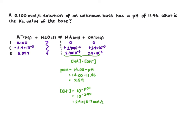Now we can use our Kb expression to solve for the Kb for this base. So Kb equals HA times OH minus divided by A minus.